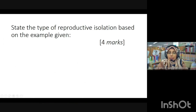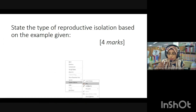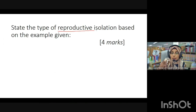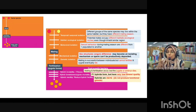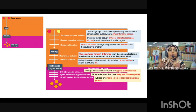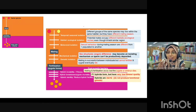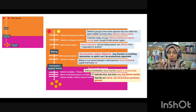Let's recall what reproductive isolation is. The keyword here is reproductive isolation. When fertilization occurs between the same species, they produce fertile and viable offspring — that's the natural condition. But with reproductive isolation, two problems may arise: prezygotic, which occurs before mating, and postzygotic, which occurs after fertilization.